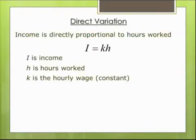Hi there, it's me, Mr. B. The example I gave you in class was that the more hours I worked, the more income I made per week. That's an example of direct variation. The equation I used was I equals KH, where I was income, H is the number of hours I worked, and K was the constant — the only thing that stayed the same throughout the example, which was what I made per hour.